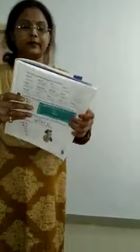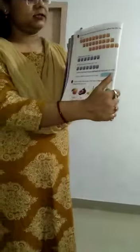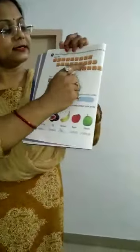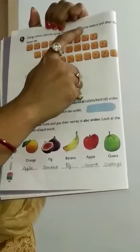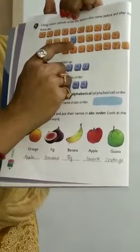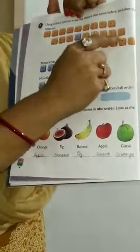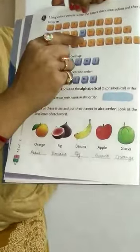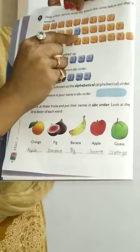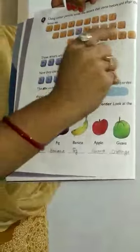Now flip out the pages, students. See here. You will write this with your colored pencils. Using colored pencils, write the letters that come before and after letter M. M is already written here. You will write these letters in small letters because M is written in lowercase.